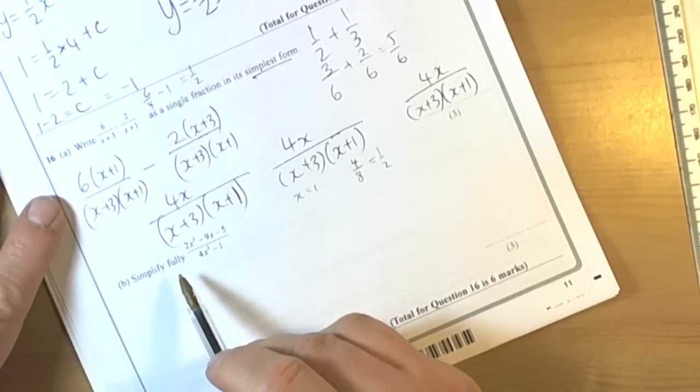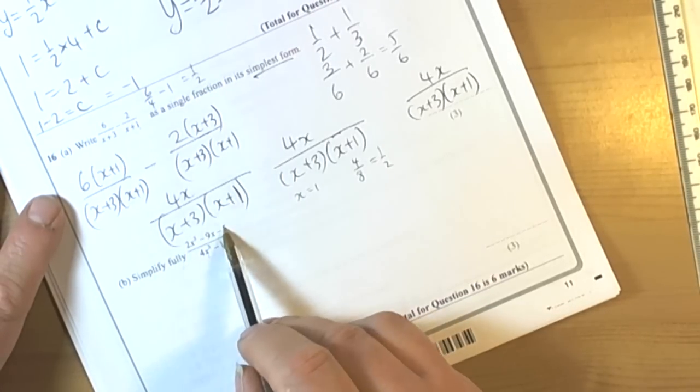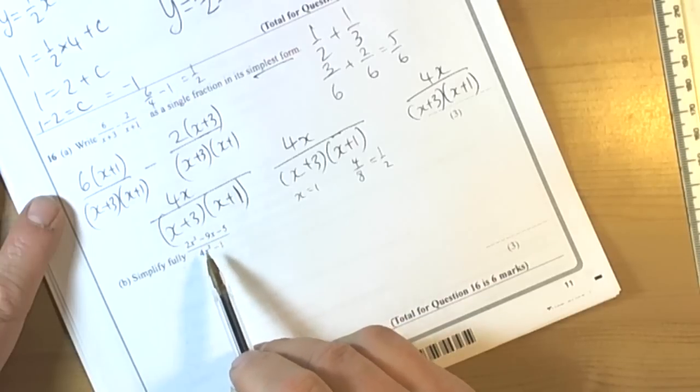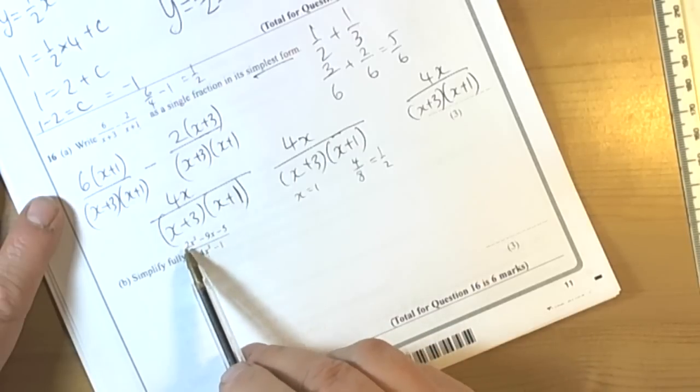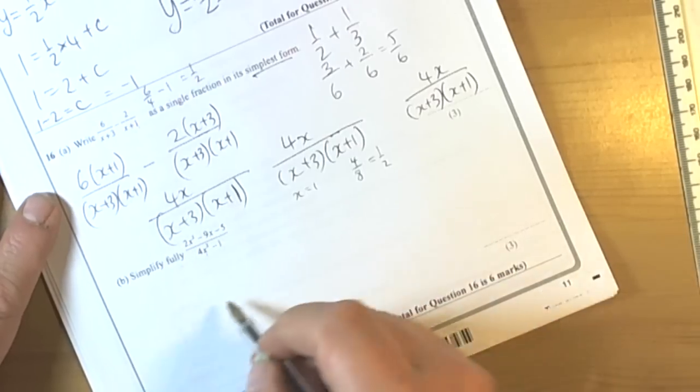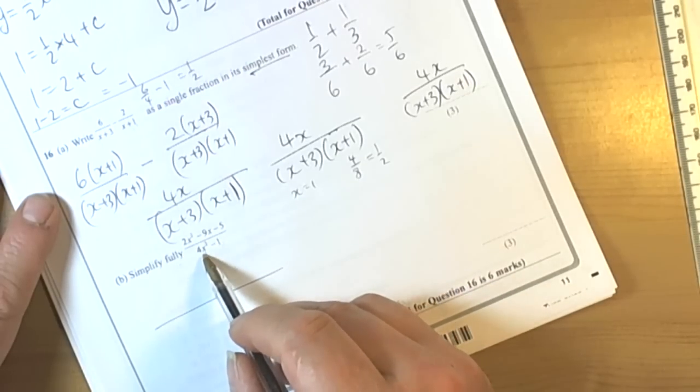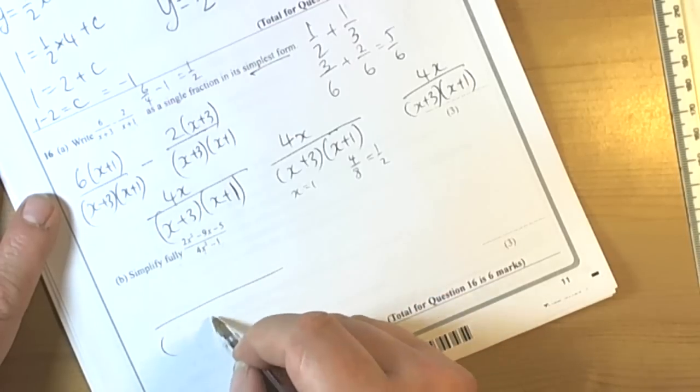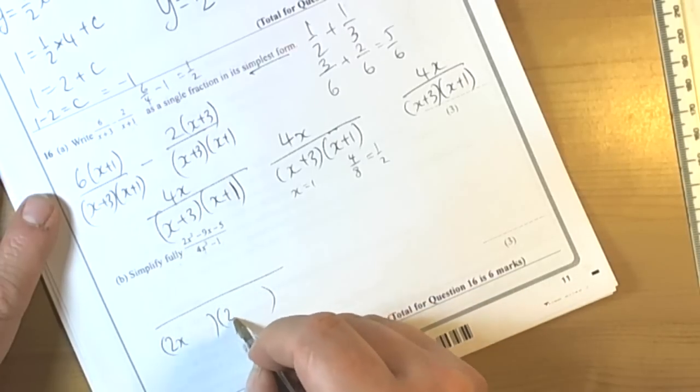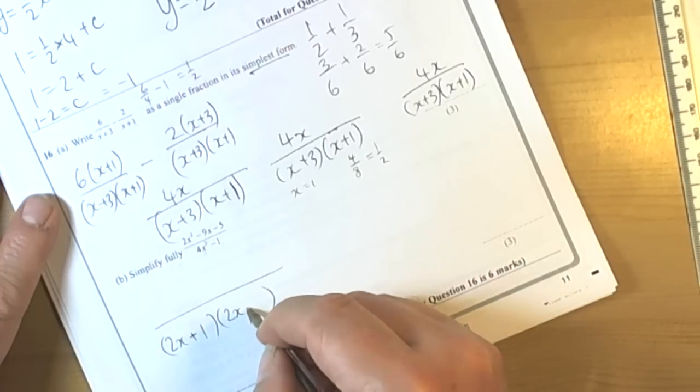Now the second part of this question is asking you to simplify fully a fraction with the top being a quadratic with a constant term at the end and the bottom being a quadratic as well. Now neither of these quadratics have common factors, so it looks like it's going to be two brackets on top and two brackets on the bottom. So because I know the bottom is the difference of two squares, 4x squared comes from 2x times 2x, and 1 comes from 1 times 1. Then the bottom brackets are 2x plus 1 and 2x minus 1.